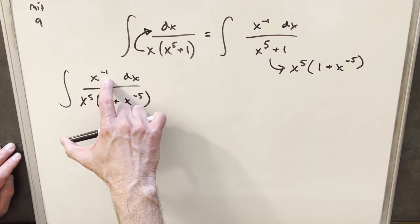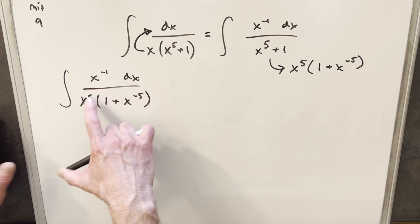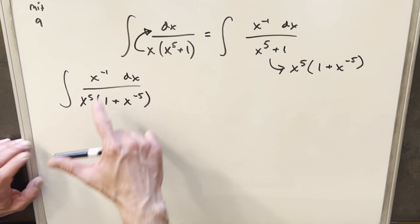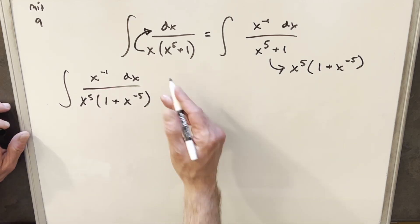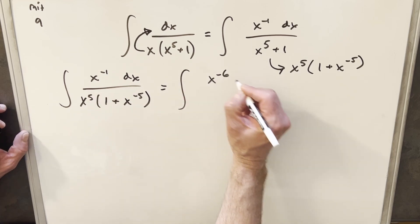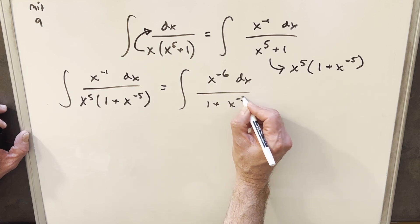But now the nice thing here is we have these two x terms. We have x to the minus 1 over x to the 5th. And what we can do is we can just combine those. We can divide this and write this as x to the minus 5th in the numerator. So multiplying those two together, we're actually going to have in the numerator, we're going to have x to the minus 6 dx over 1 plus x to the minus 5.